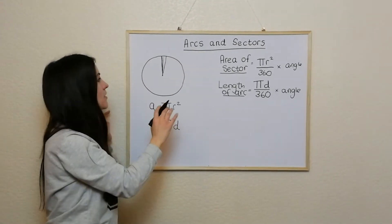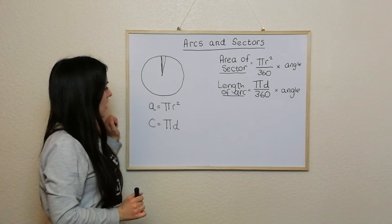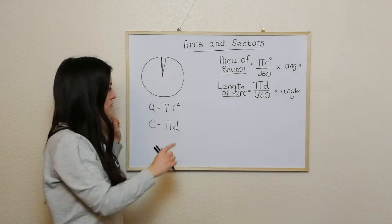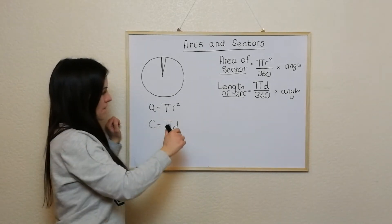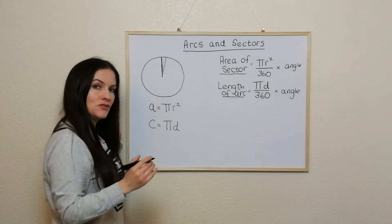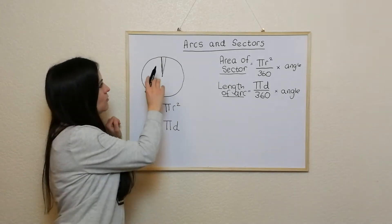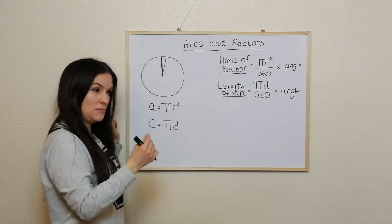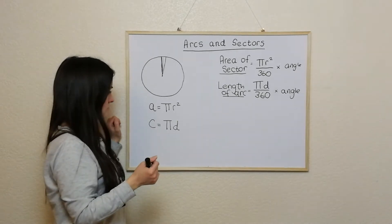And if we imagine getting the area of the full pizza first of all, so pi r squared, and then divide it by 360, that would allow me to see what the size of one of these bits would be. So each of these bits would be one degree.